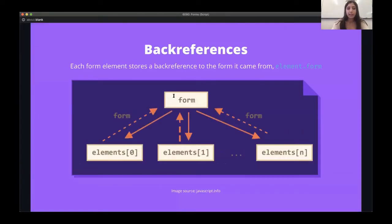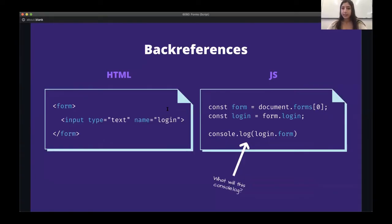One cool feature of form elements is back referencing. When you have a DOM element for one of the input elements in a form, that element has a form attribute which stores a back reference to the form it's contained in. You can see in the diagram that the form has all its children elements, and each element also references the form it's contained in. In the example, if I do document.forms[0] to get the form and then .login to get the login element, I can then do login.form to get back the containing form. So console.log of login.form will give us our form variable.